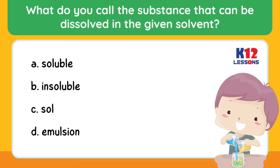What do you call the substance that can be dissolved in the given solvent? A. Soluble. B. Insoluble. C. Sol. D. Emulsion.